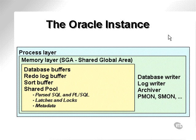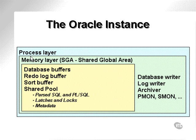The Oracle instance is a term used to describe the part of an Oracle database which exists in memory when an Oracle database is running — namely, the memory layer, the Shared Global Area, and the process layer. In other words, the Oracle instance is made up of all the memory buffers plus the processes. This is what causes the Oracle database to actually run.